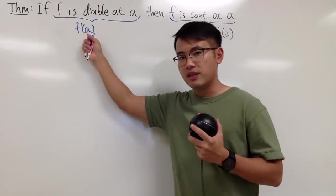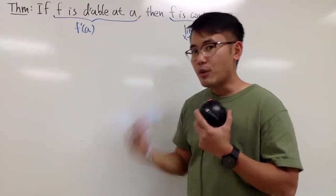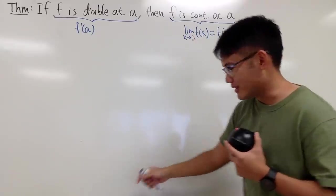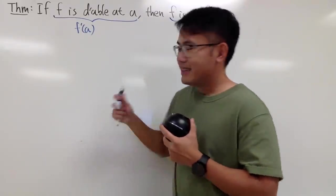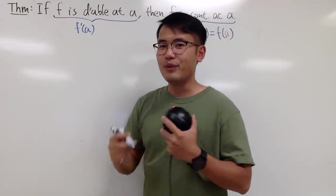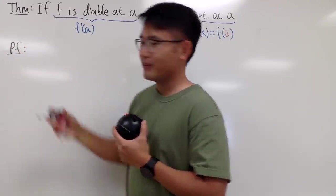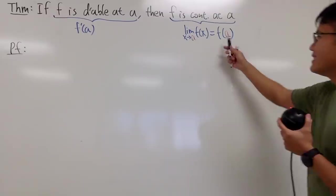And of course, this is the given condition. Somewhere, we must use the condition in our proof. Otherwise, you know you are doing something wrong. Anyway, thm stands for theorem, and pf stands for proof. And this is what we're trying to show. So we start from the left-hand side.